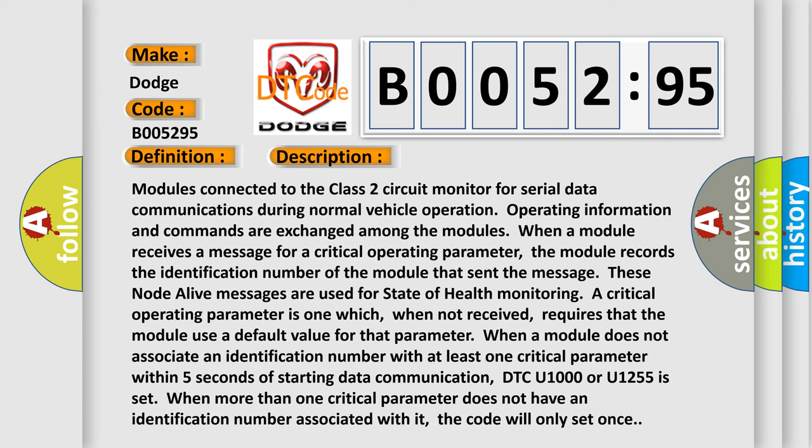Modules connected to the Class 2 circuit monitor for serial data communications during normal vehicle operation. Operating information and commands are exchanged among the modules. When a module receives a message for a critical operating parameter, the module records the identification number of the module that sent the message. These node-alive messages are used for state of health.